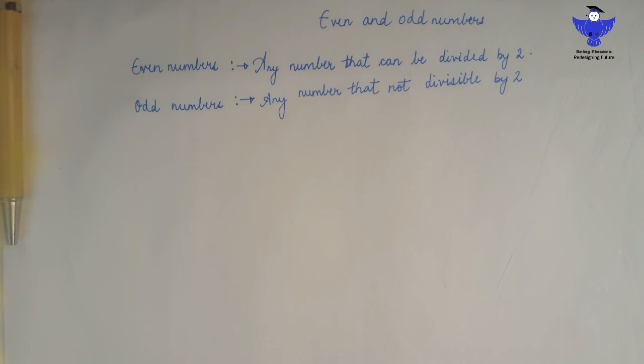Any numbers that can be divisible by 2 are known as even numbers, and odd numbers that are not divisible by 2 are called odd numbers.